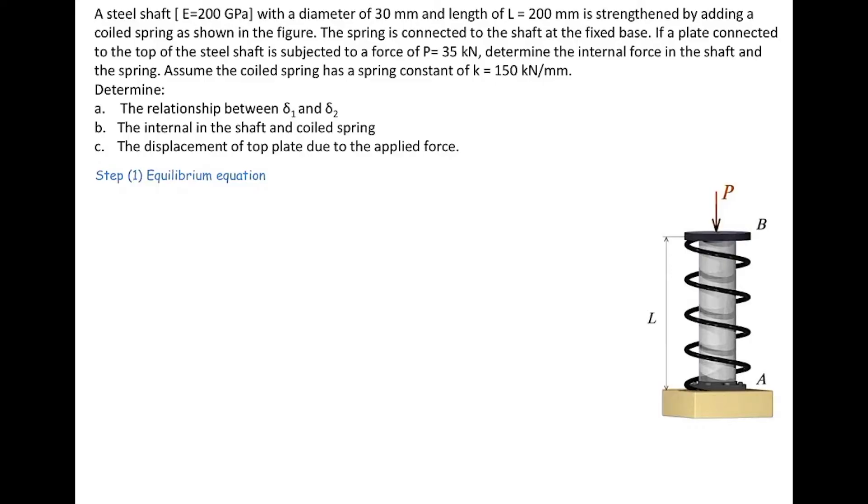The very first step would be starting from the equilibrium equation. We try to find out the internal forces just by equilibrium equation. We are going to use the free body diagram. In order to find a free body, I'm going to cut that element somewhere between A and B and then put two unknown forces, one for the shaft and one for the coiled spring.